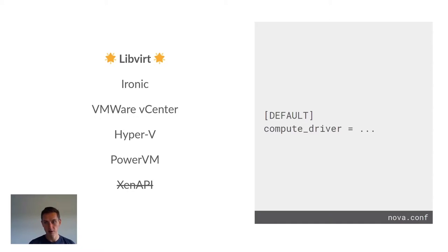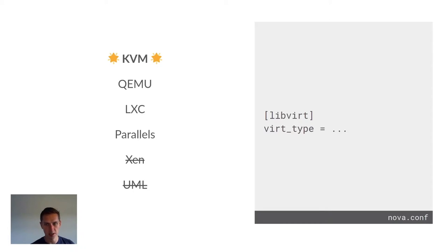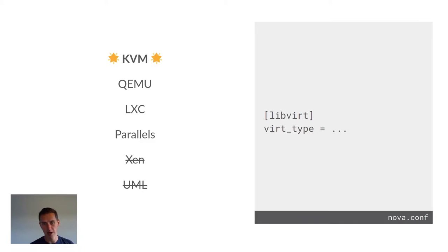The LibVirt driver wasn't the original driver that Nova supported — that was the Xen API driver. That driver was deprecated in the Train release and was finally removed over the course of the Victoria release cycle. LibVirt itself isn't actually a hypervisor; it's an abstraction layer over different hypervisors. Nova offers the ability to configure the actual hypervisor that LibVirt is using, and the clear winner is the QEMU and KVM-accelerated QEMU backends, which are used in the gates and in the majority of deployments.